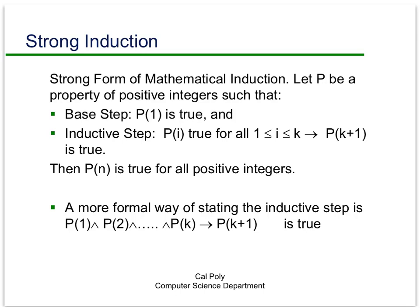So what is the strong form of mathematical induction? It's very similar to plain old mathematical induction. It consists of a base step and an inductive step, and you're trying to show that some propositional function — a property of the positive integers — is true for all integers n greater than or equal to 1. The base step consists of either one or a small number of propositions being shown to be true to get us started, so we might have more than one.